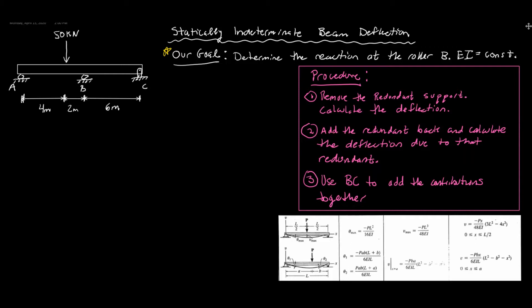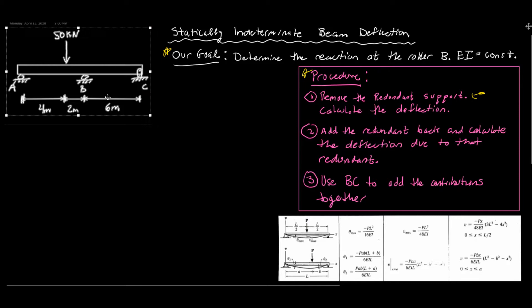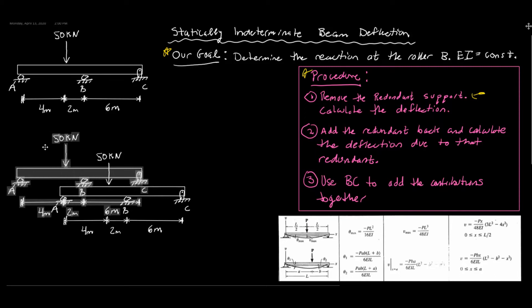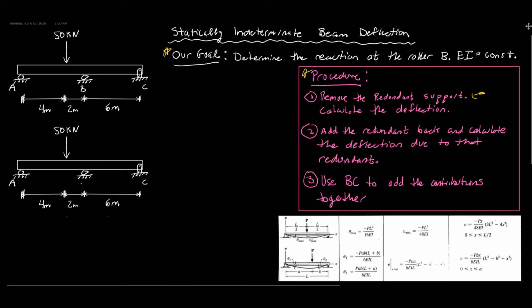We have to adjust our procedure to solve this problem. The general procedure we're going to follow is: our first step is to remove the redundant support. Since we have more redundants than equations, we need to remove support B. We're going to copy this beam down, remove the B support, and calculate the deflection of the beam due to this loading only.